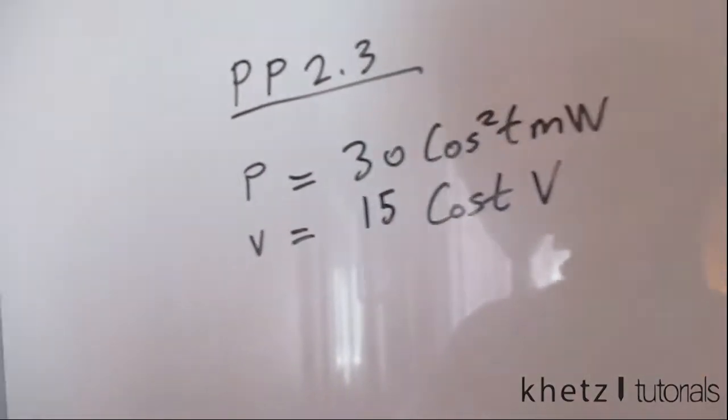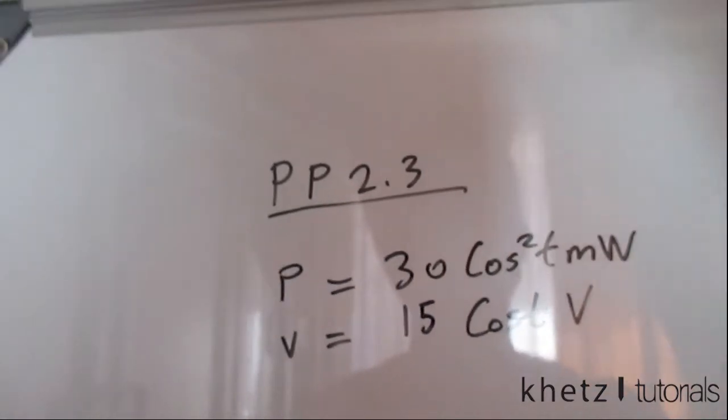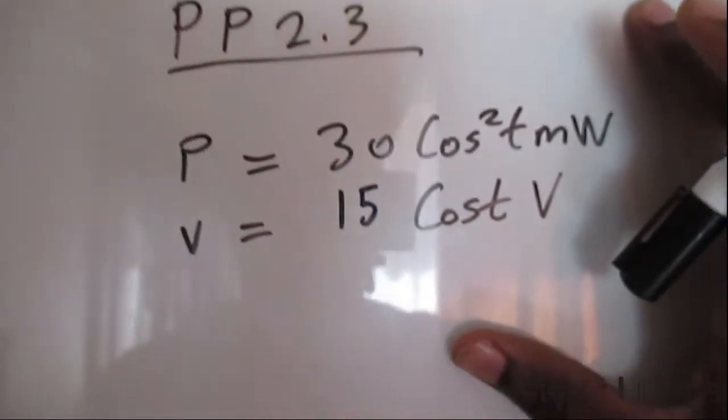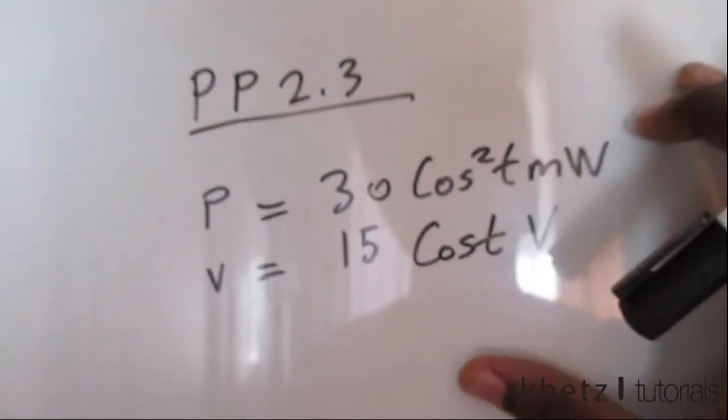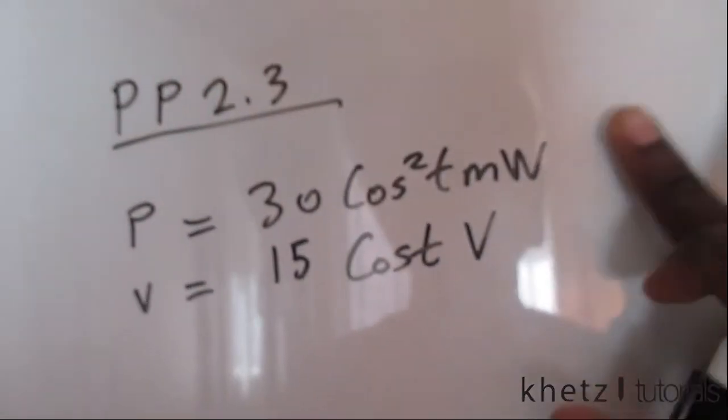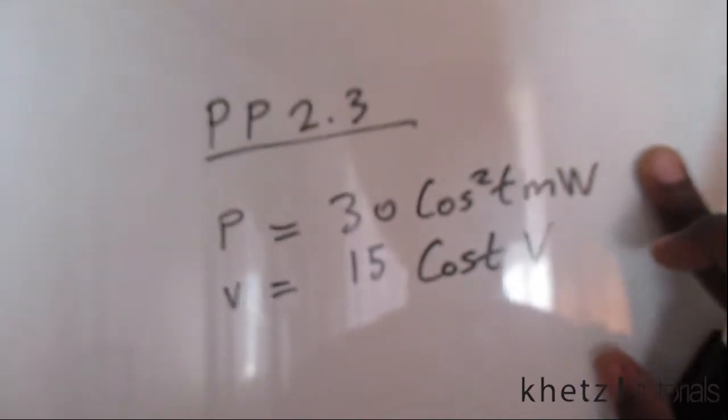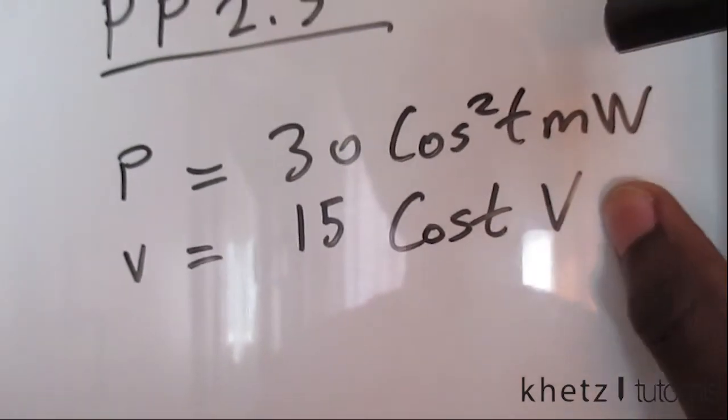Welcome to Kat's tutorials. In this video we're going to be covering practice problem 2.3. The question says a resistor absorbs an instantaneous power of 30 cos squared t milliwatts when it is connected to a voltage source V equals 15 cos t volts.